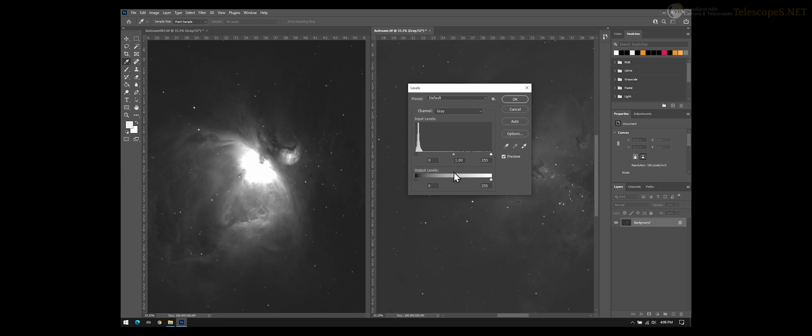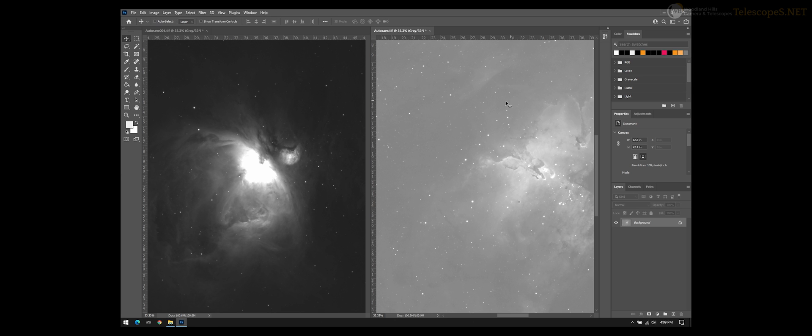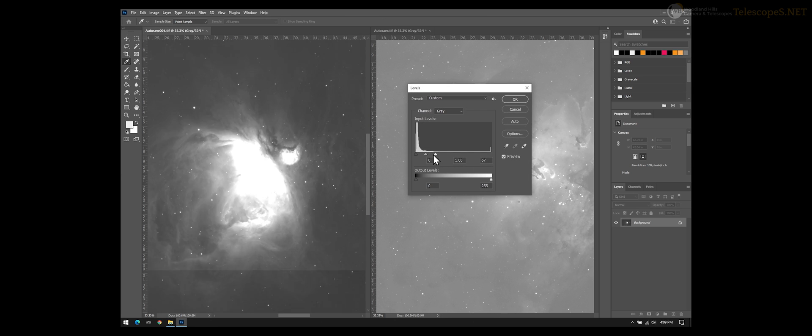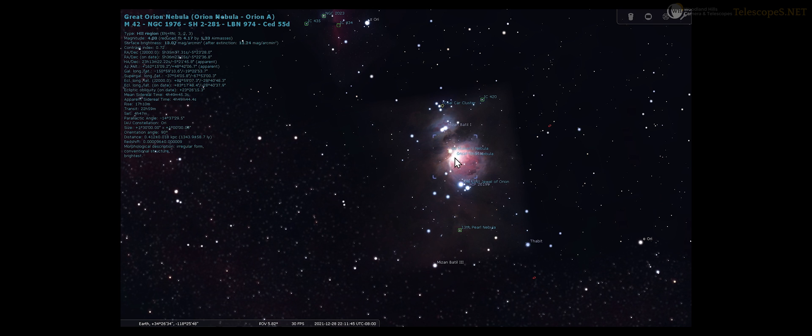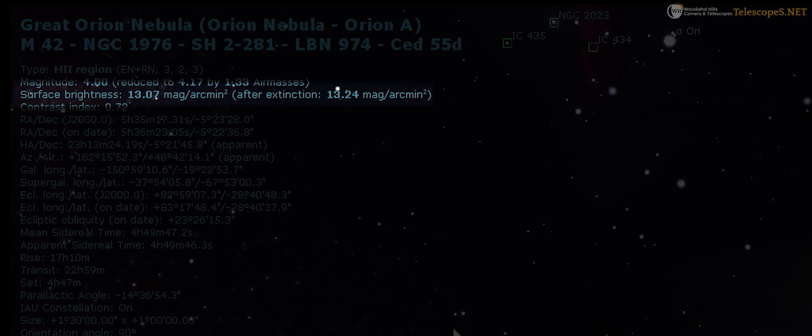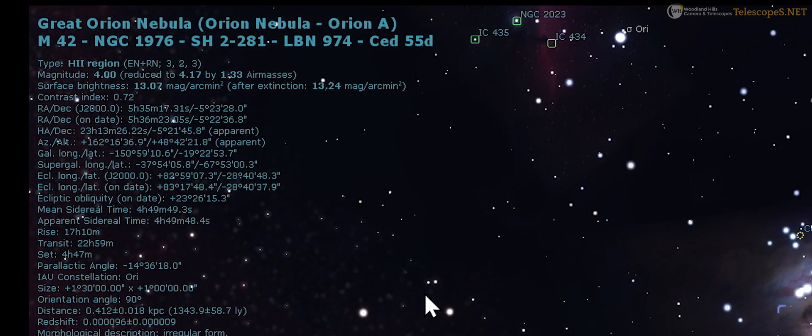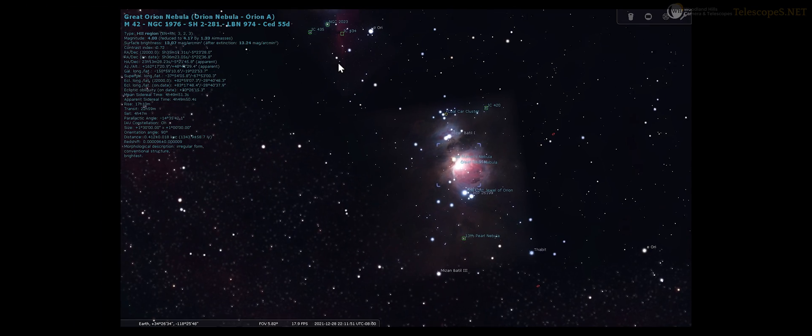You have to experiment with your setup. The Orion Nebula easily blows out compared to the Eagle, which requires longer exposures to achieve the same results. Each astronomical object has its own defined surface brightness that will help you determine what exposure lengths you are aiming for.